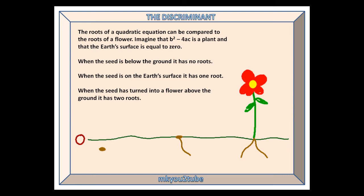The roots of a quadratic equation can be compared to the roots of a flower. Imagine that b squared minus 4ac is a plant, and that the earth's surface is equal to 0. When the seed is below the ground, it has no roots. When the seed is on the earth's surface, it has one root. And when the seed is turned into a flower above the ground, it has two roots.